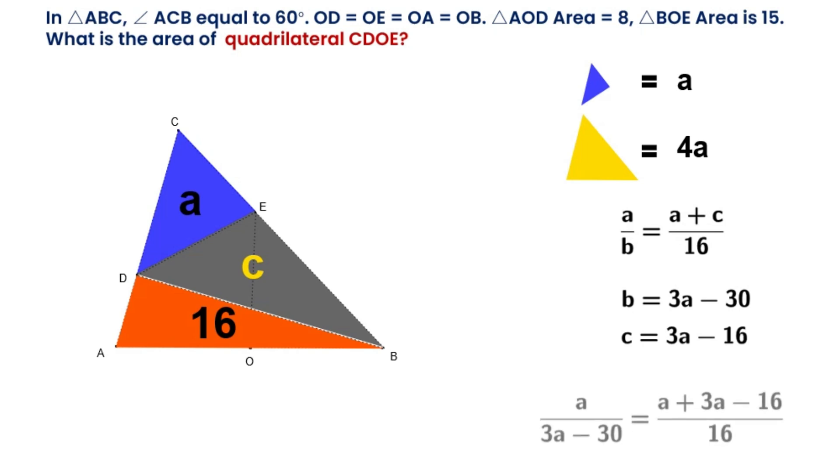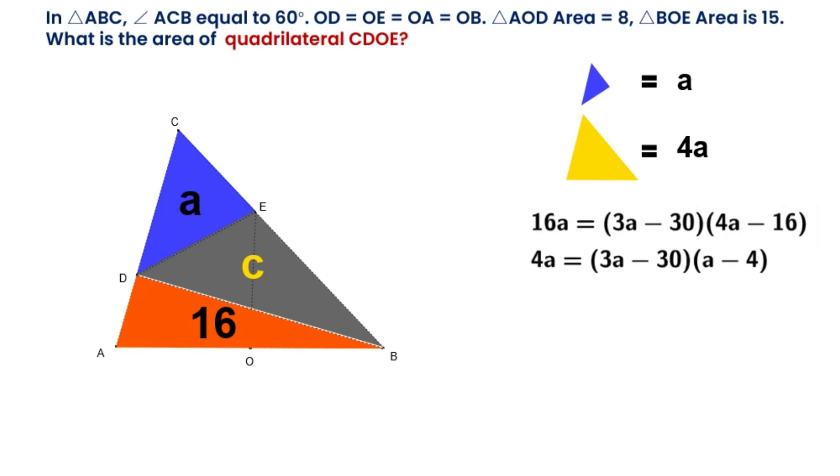We get the equation for A. After simplification, we get a quadratic equation with respect to A in one variable. After factoring, we get (A minus 12) times (3A minus 10) equals 0. A equals 12, or A equals 10 over 3.